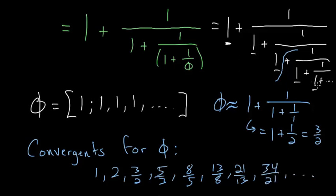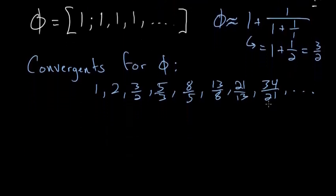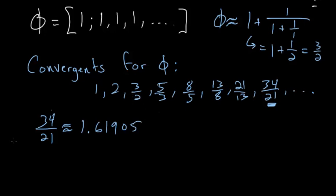The further down this infinite continued fraction you make the cutoff to get a convergent, the better the rational approximation for phi. For example, the convergent 34 over 21 gives approximately 1.61905. Looking at the actual decimal value of phi, which is 1.61803 and goes on forever, these two values differ only in the third decimal place.